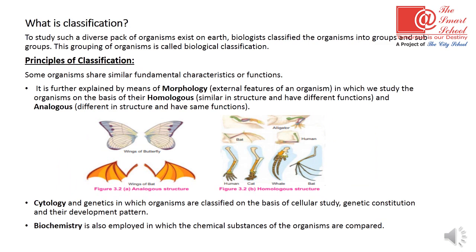We are done with biodiversity. The next topic is classification. There are a lot of organisms on earth, so it is very hard to study all of them. For our ease, we perform classification. To study such a diverse pack of organisms existing on earth, biologists classify organisms into groups. This grouping of organisms is called biological classification.